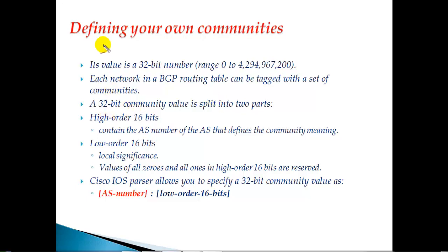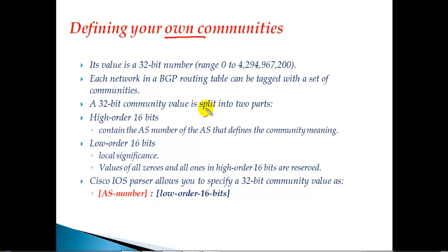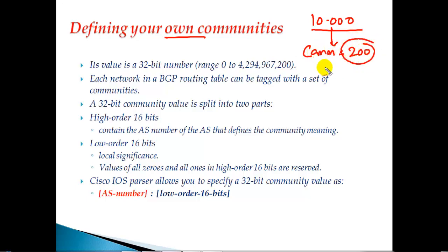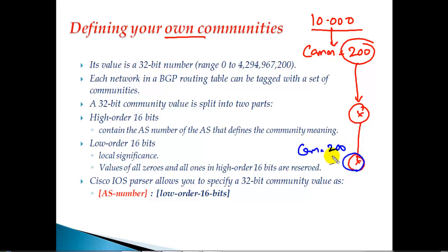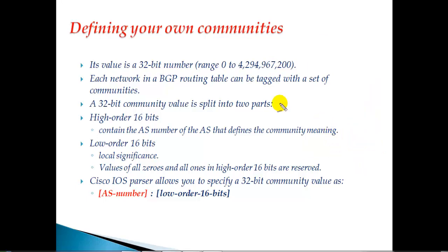The second category of attributes is our own communities. When defining our own communities, we match a specific network and define our own value - for example, community value 200. This number has no predefined behavior; it's up to our requirements. We can advertise this to all routers, and each receiving router can decide what to do with community value 200 - whether to do some filtering, apply local preference, apply weight, or anything else. We just tag our routes and it's up to the upstream router to decide what to do.